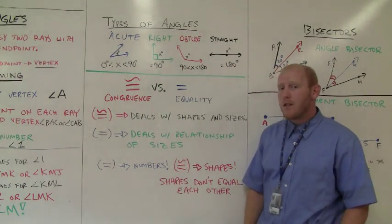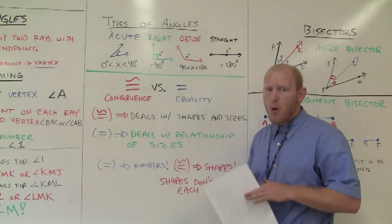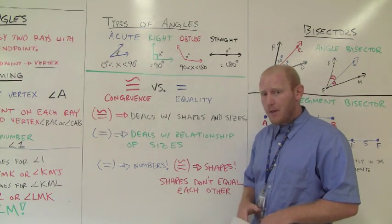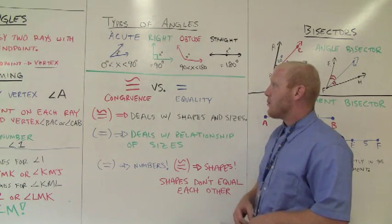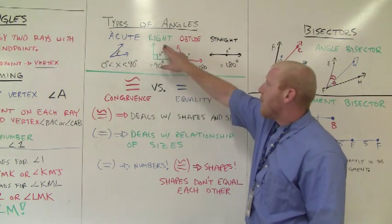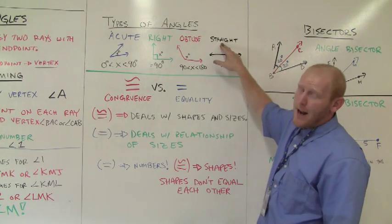Now we're going to move on to the types of angles. This should be a review, so I'm only going to go through it briefly. Here are our four types of angles: we have an acute angle, a right angle, an obtuse angle, and a straight angle.